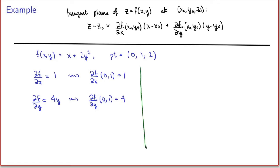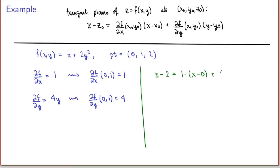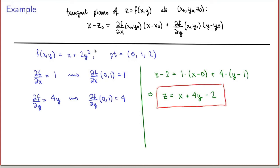Now I substitute into the general equation of the tangent plane. I get z minus 2 equals 1 times (x minus 0) plus 4 times (y minus 1). Simplifying and solving for z, the right-hand side gives x plus 4y minus 4 plus 2, so z equals x plus 4y minus 2. This is the equation of the tangent plane to the graph of f(x,y) = x + 2y² at the point (0, 1, 2).